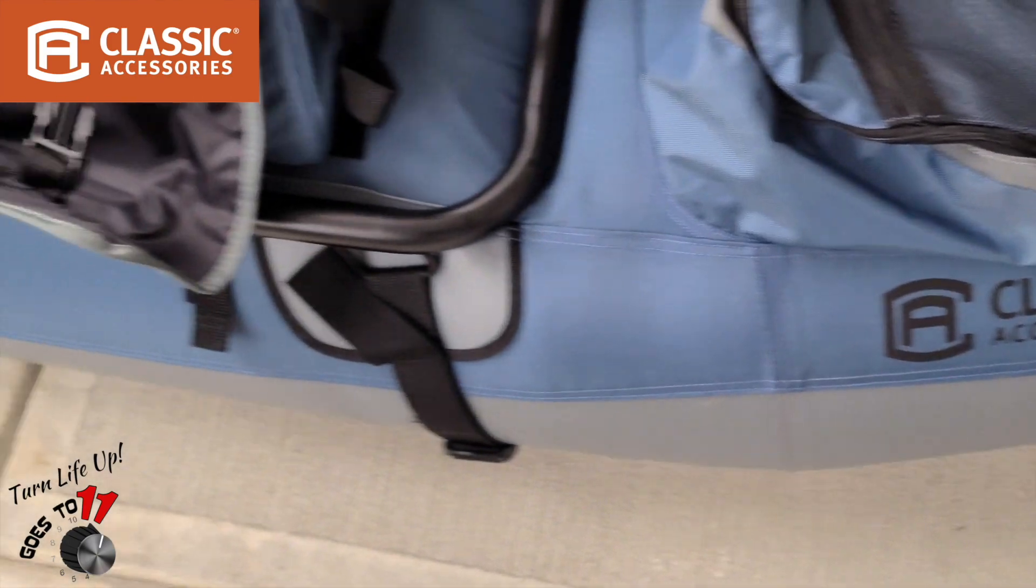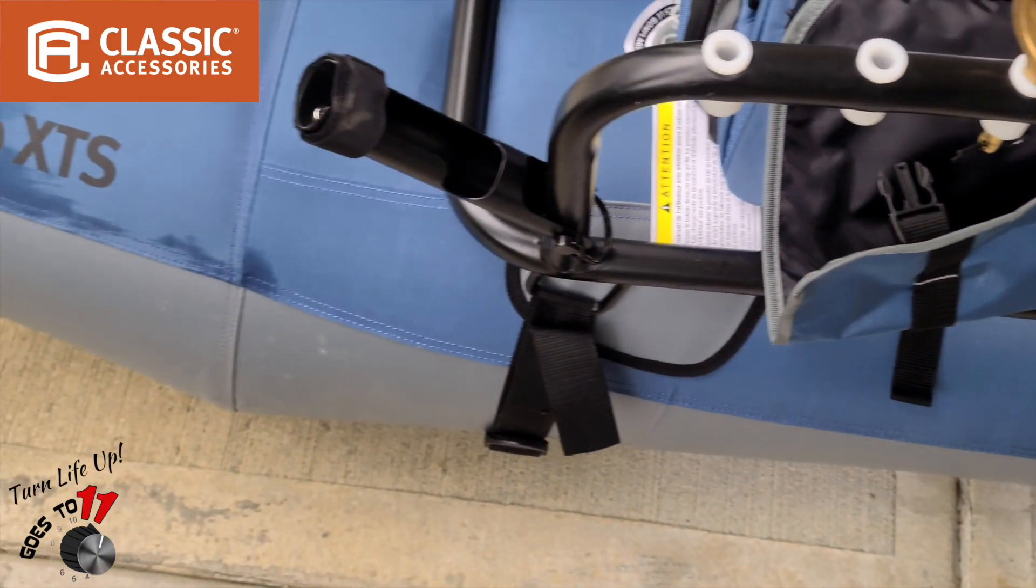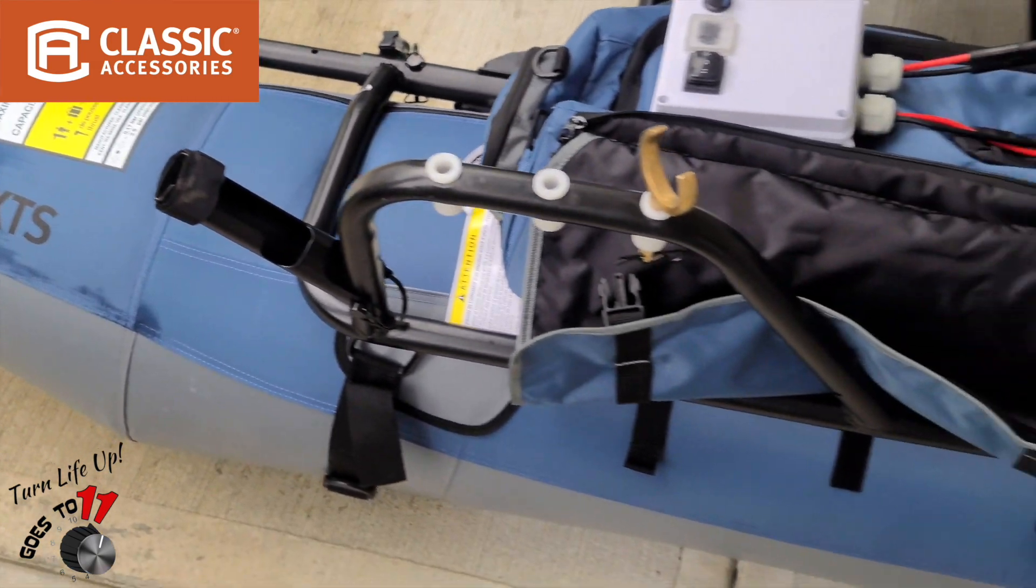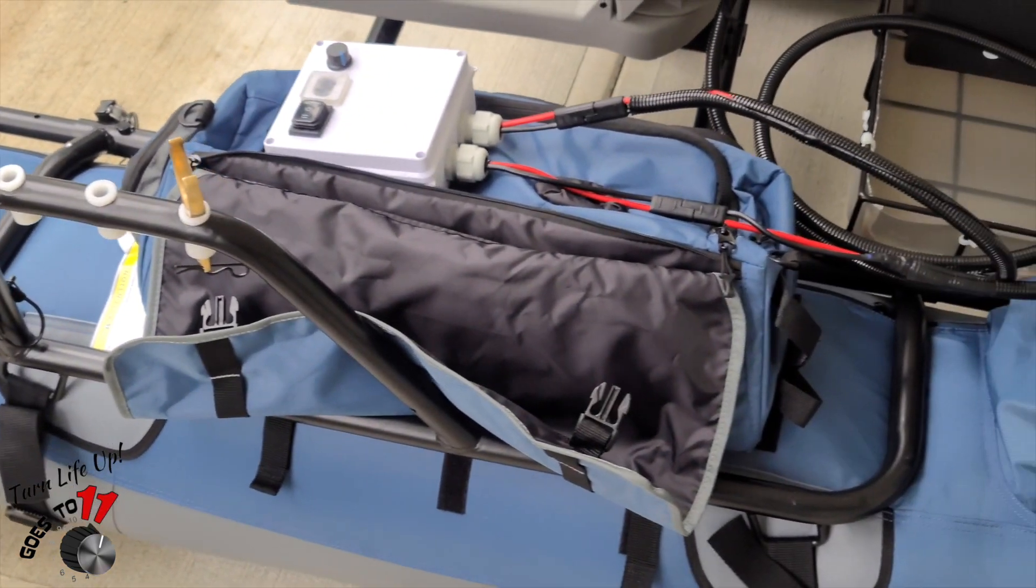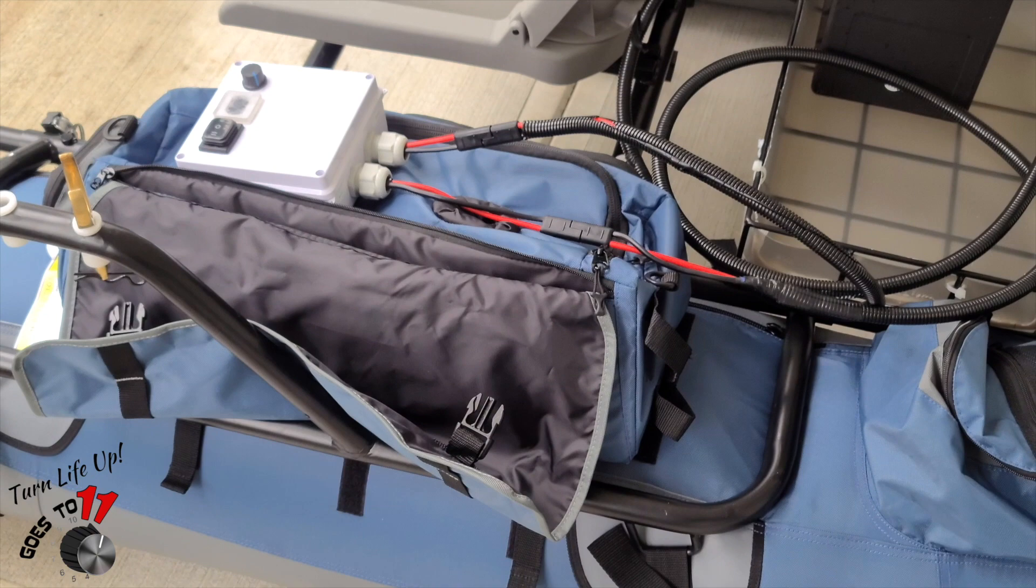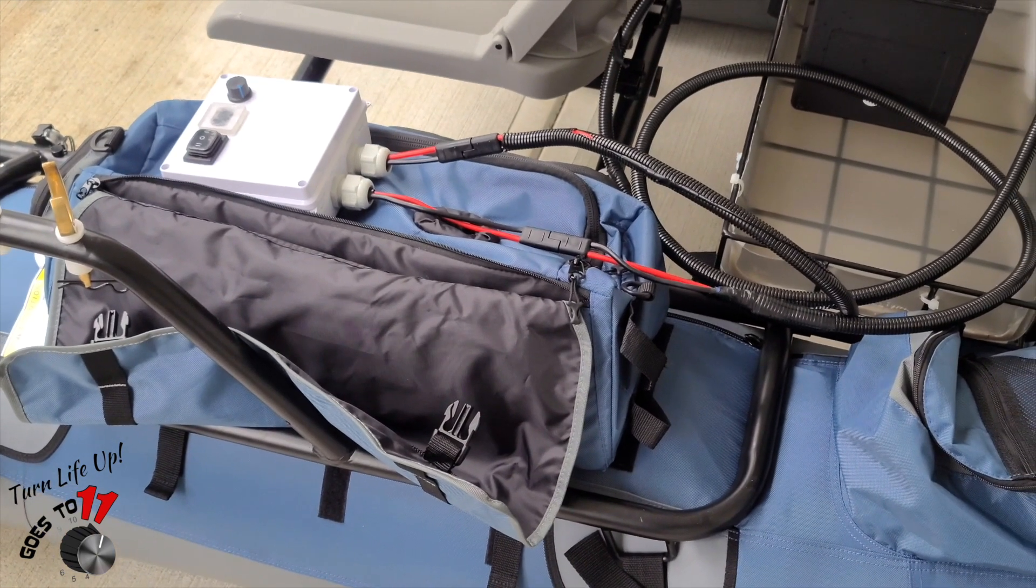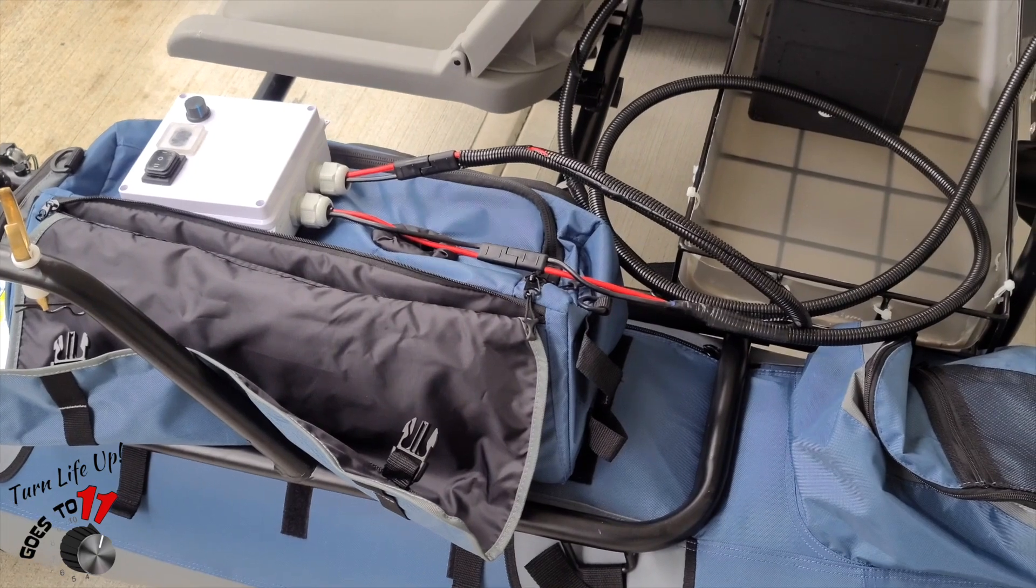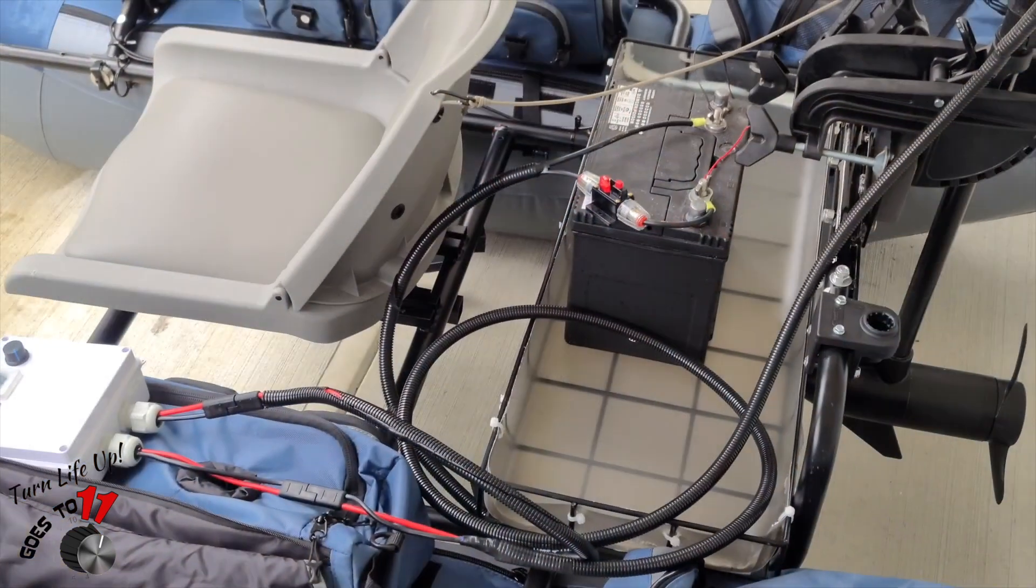All right guys, here you go. Classic Accessories Colorado XTS - this is an awesome little fishing machine and we've done some amazing tweaks to it thanks to some videos off of YouTube and a little bit of ingenuity as well. My buddy Glenn and I, we did a great job on this boat.